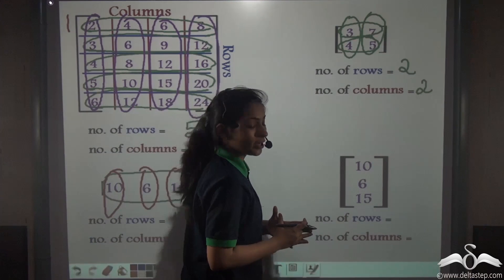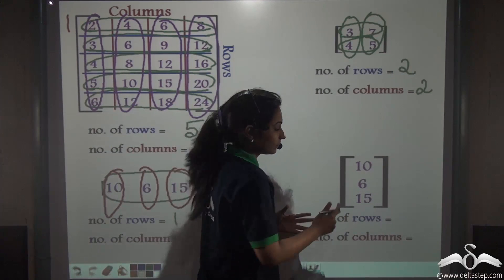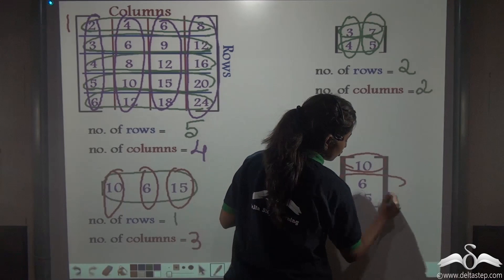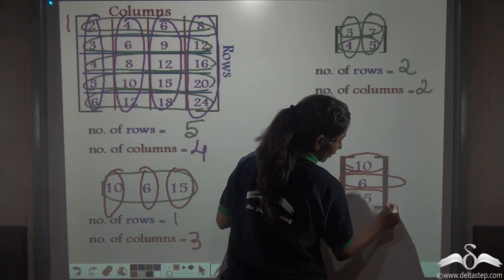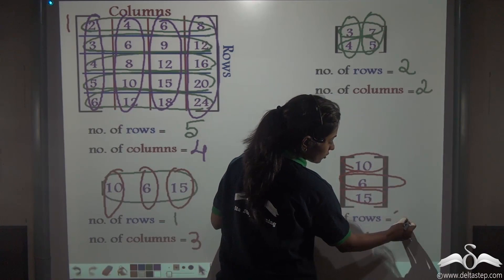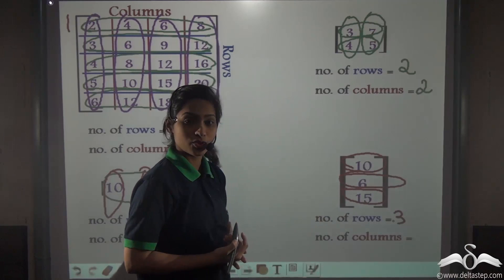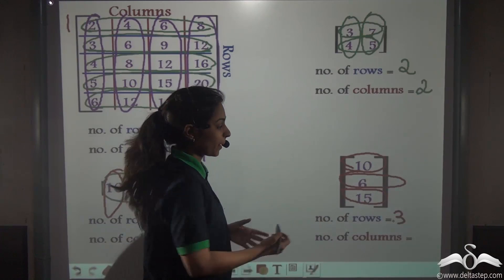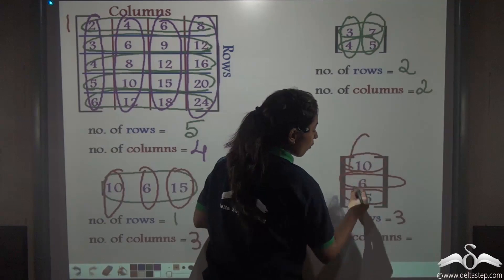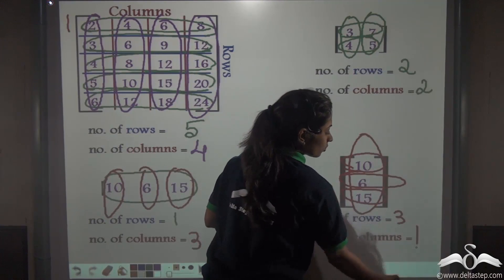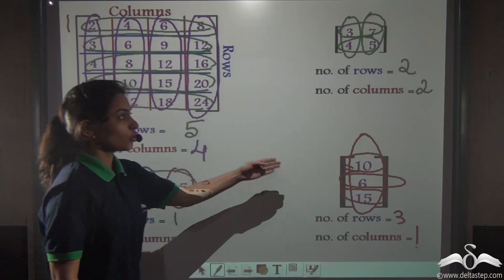Look here — how many rows do you see? 1, 2, 3 — three rows. And how many columns do you see? Only 1 column. So you can see there can be different types of matrices.